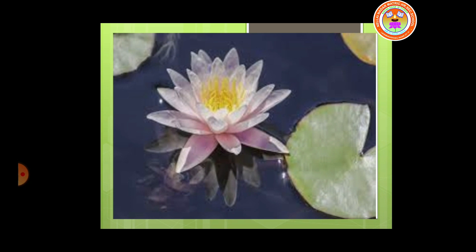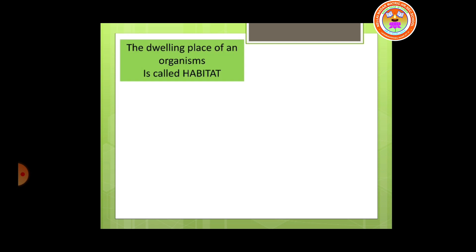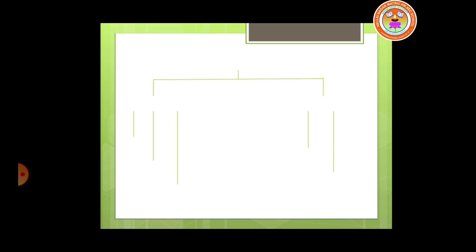Next we will move on to the new topic: habitat. Habitat is the dwelling place of an organism — the place where a particular organism lives. We have two types of habitat: aquatic habitat and terrestrial habitat.